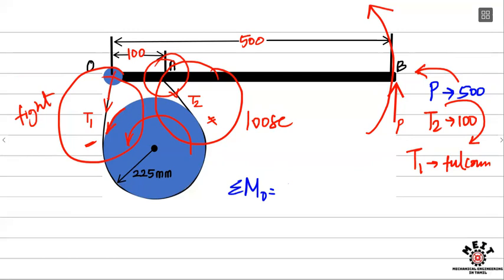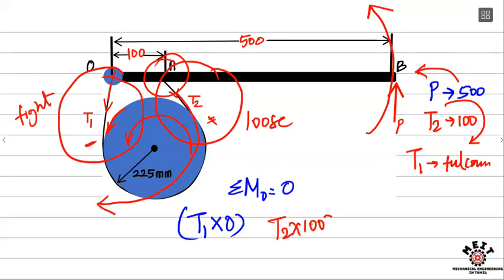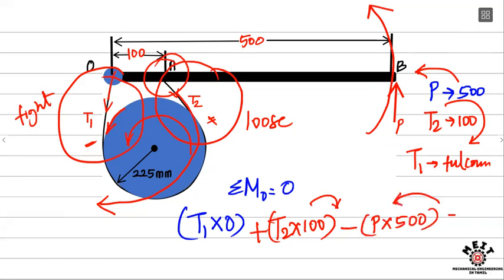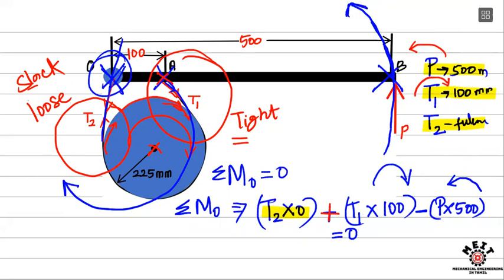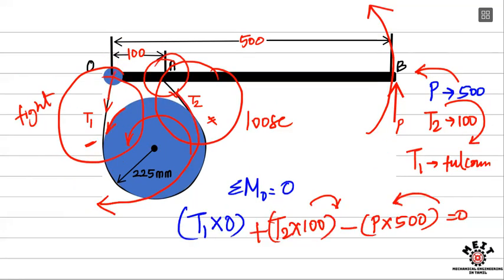Summation of moments equals zero. For clockwise rotation: T2 acts at 100 mm (clockwise, positive) and P acts at 500 mm (anti-clockwise, negative). The moment equation is: T2 × 100 − P × 500 = 0. For anti-clockwise rotation: T1 acts at 100 mm and T2 is at the fulcrum, so the equation becomes T1 × 100 − P × 500 = 0.